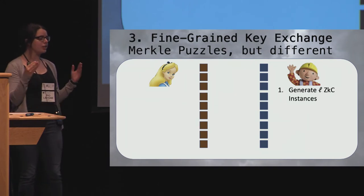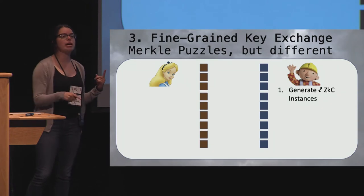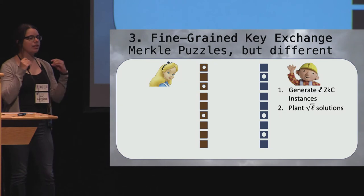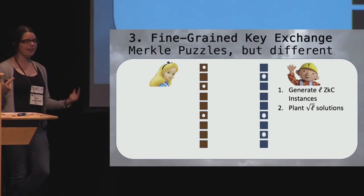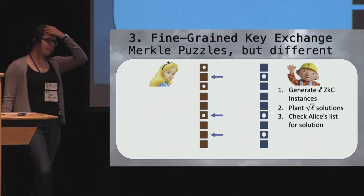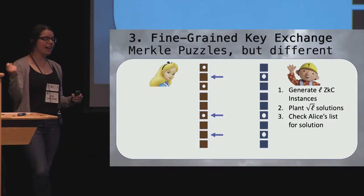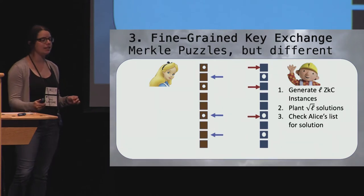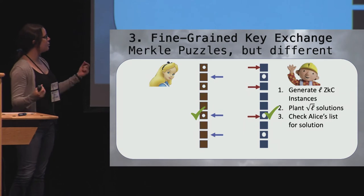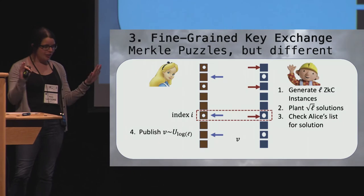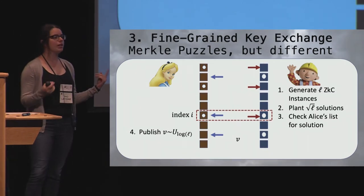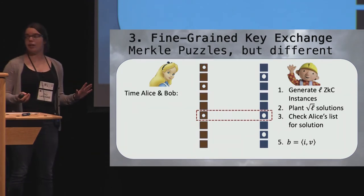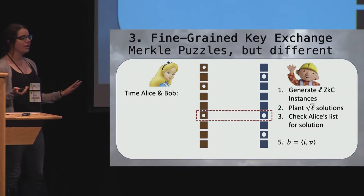So, for this, Alice and Bob are each going to generate L zero k clique instances. L is going to be a parameter we define based on n later. Then, they're each going to choose square root L positions in these instances, and plant solutions in those spots. And hopefully, again, they're going to collide in exactly one index because they're choosing square root. Then, Bob is going to brute force check every spot that he planted in index inside of Alice's list. And Alice is going to do the same brute force check. So, they are solving zero k clique instances. And then, they find that, oh, hey, they both planted a solution at index i. Now, for entropy reasons, we can't just use i as the key itself. So, Alice is going to publish a random 0, 1 vector of length log L, and the key is going to be the dot product between i and this vector v.